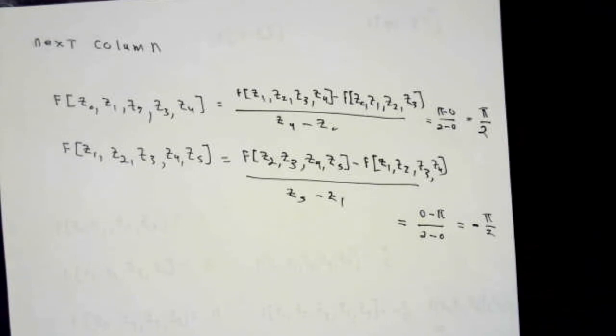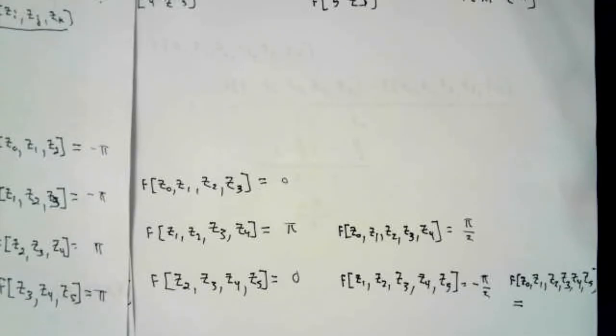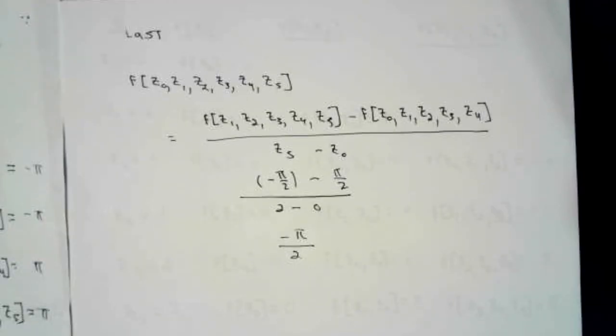Doing the calculations as usual, the first number is π over 2 and the second one is negative π over 2. So finally, there's one last divided difference to calculate. The last one is going to be this number minus that number divided by z5 minus z0. This is going to be this number minus z0, which, after doing the arithmetic, is negative π over 2.